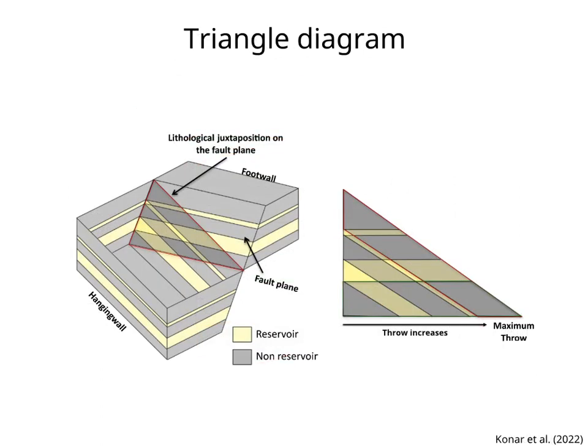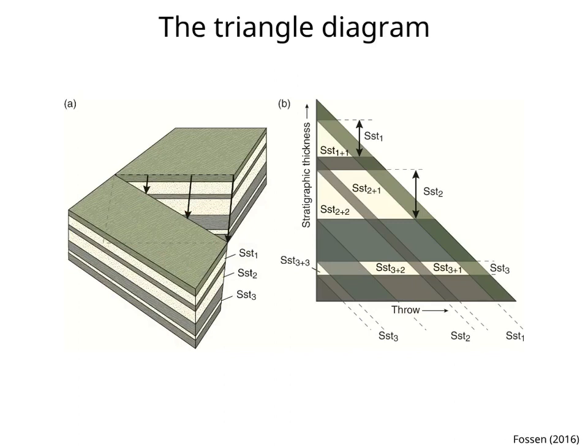Another technique to analyze juxtaposition on the fault plane is the triangle diagram. Imagine the fault is rotational as illustrated in the left figure. The fault throw increases linearly from 0 to a maximum value along strike. Lithological juxtaposition occurs on a triangular area. As shown in the right figure, we can isolate this triangle and display on it the footwall strata as horizontal layers and the hanging wall strata as inclined layers. By doing so, we can mark on the triangle the areas where reservoirs are juxtaposed. For example, in the triangle, area SST2+1 is the area of juxtaposition of sandstone 2 in the footwall and sandstone 1 in the hanging wall.